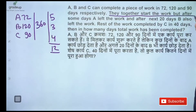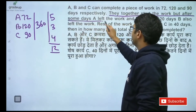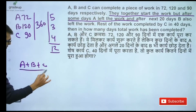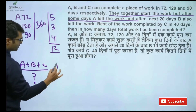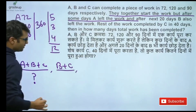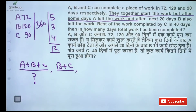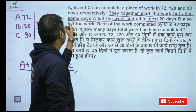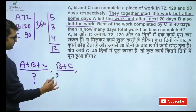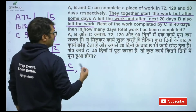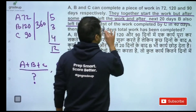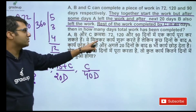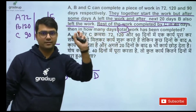They together start the work, but after some days A left the work, so we are left with B and C. After the next 20 days, B also left the work, so we are left with C. The rest of the work is completed by C in 40 days. In how many days was the total work completed?